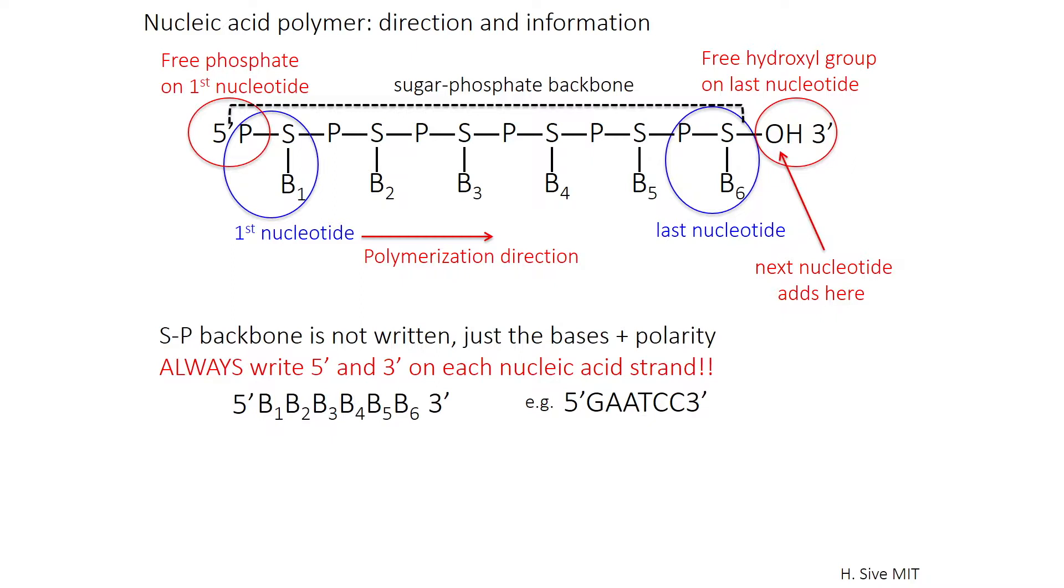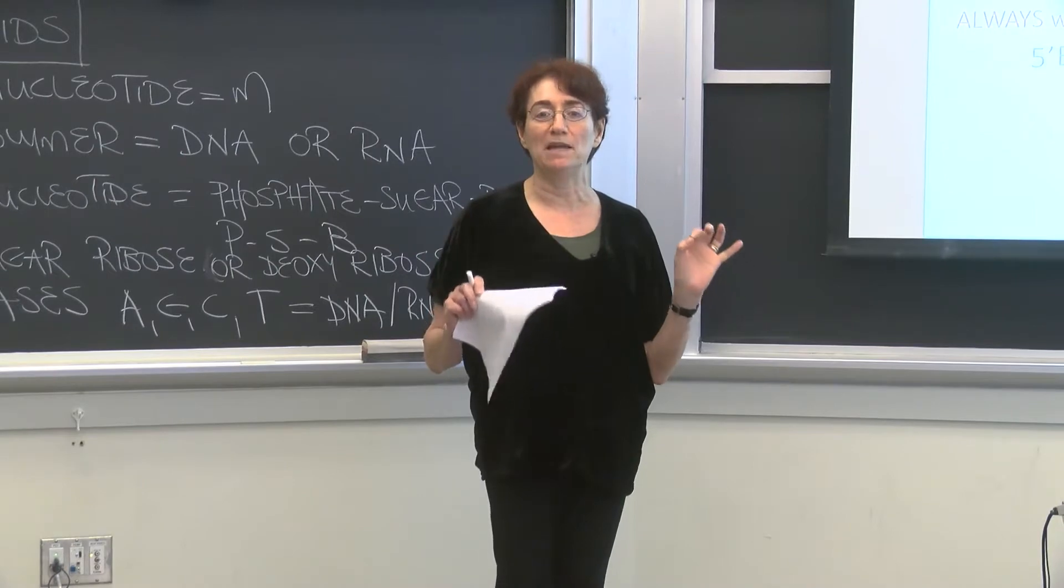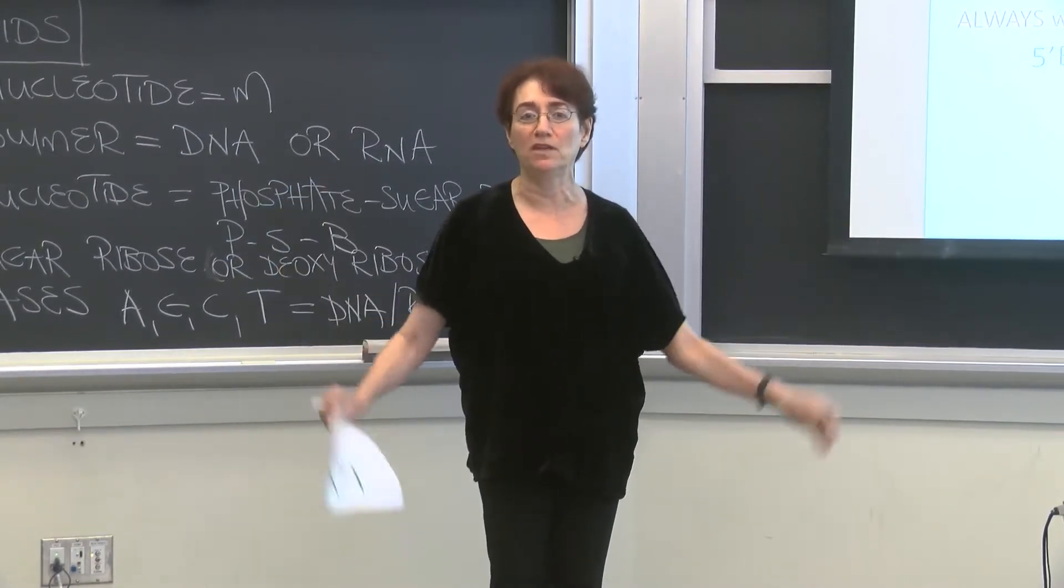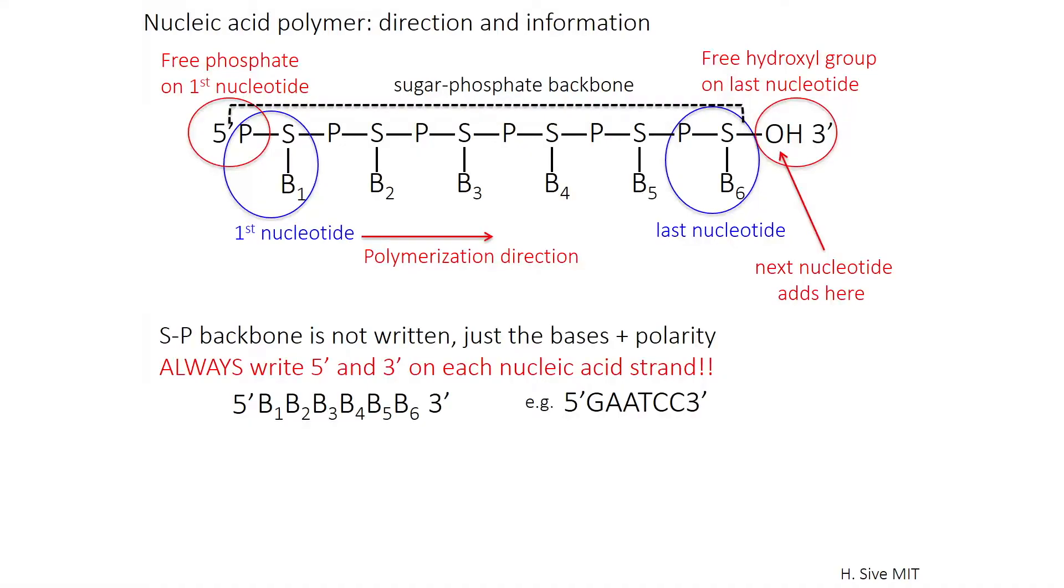But when we write the sequence of the bases on nucleic acid, we don't write the sugar phosphate backbone. We just take that as a given. What's really important are the base order, B1 to B6 in my diagram, or I've put a real example there. And the 5' and the 3' ends. And you always, always, always write those 5' and those 3' ends. Doesn't matter if you've been working with nucleic acids for 30 years. You always have to write 5', 3', and the base order between. There is no exception ever, ever, ever. It's one of the most important things I can tell you.